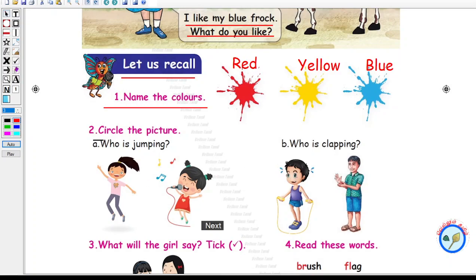Next. Circle the picture. Here, who is jumping? Is it she or her? Yes, the first girl is jumping.